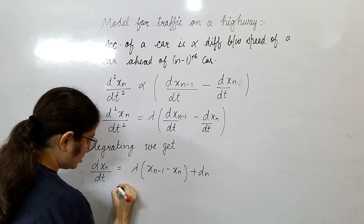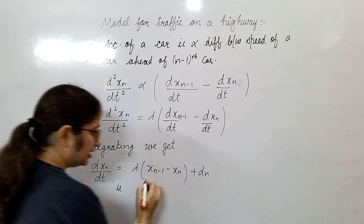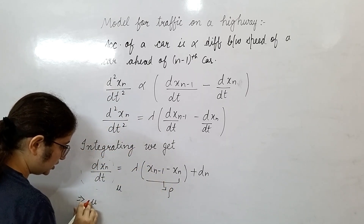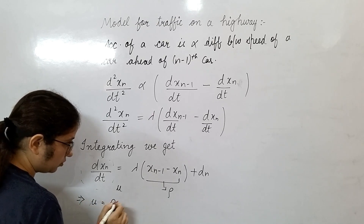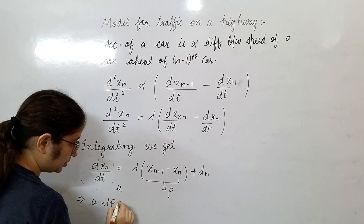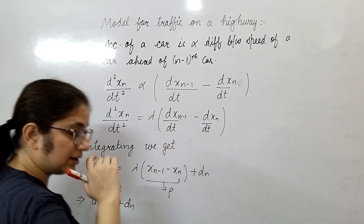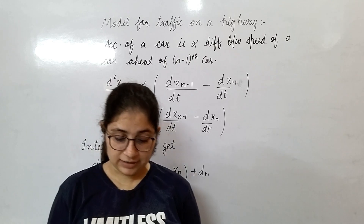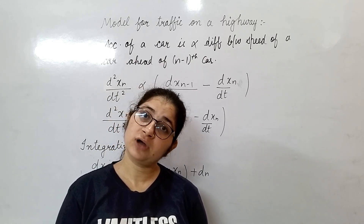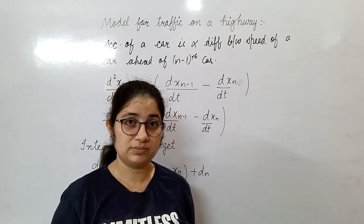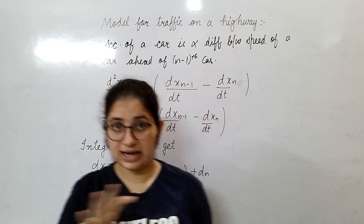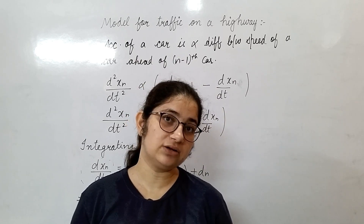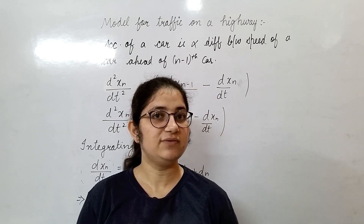Say this is your speed u, and this difference is rho. So speed u equals lambda times rho plus d_n. Now practically assume one situation: if traffic density rho — meaning the number of cars on the highway — is at its maximum limit, then what will be the speed of the car? That speed will be zero.